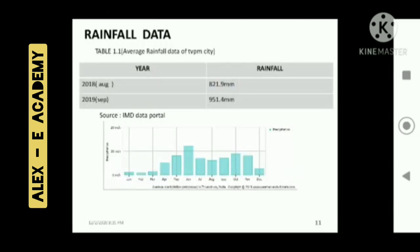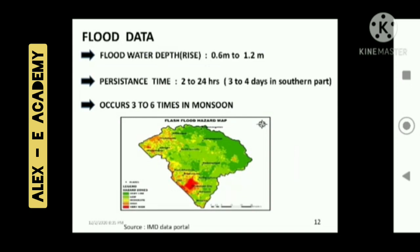This table shows the average precipitation in 2018 and 2019. The total rainfall received in 2018 is 821.9 mm and in 2019 is 951.4 mm. A bar diagram shows the average precipitation of 2019 in Thiruvananthapuram, with heavy rainfall from April to November. June is the wettest month and February is the driest month. The amount of water rise during floods is 0.6 m to 1.2 m, with persistence time of 2 to 24 hours, and 3 to 4 days in the southern part.